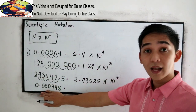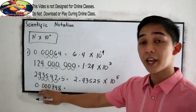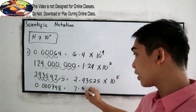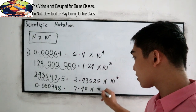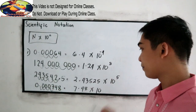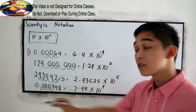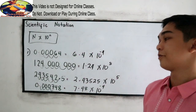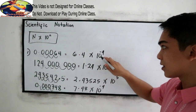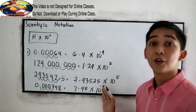Our last example: 0.000748 has a small value, so that will become 7.48 times 10. We move the decimal 1, 2, 3, 4 places, and since it is a small number, that is negative 4. So 7.48 times 10 raised to negative 4.